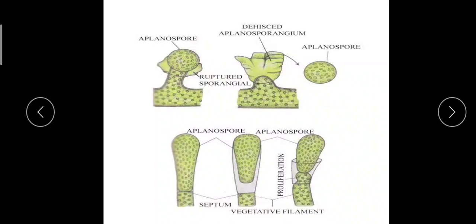Aplanospores are produced in an aplanosporangium located at the tip of short branches. The aplanosporangium is cut off from the main branch by a wall, and its protoplasm detaches from the cell wall and transforms into a thin-walled aplanospore, which may be round, club-shaped, or vary by species. After the aplanosporangium wall ruptures, the aplanospore is released and germinates to form a new thallus. In the next class we will learn about the sexual reproduction of Vaucheria.